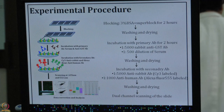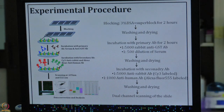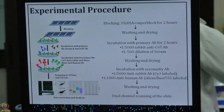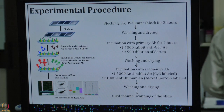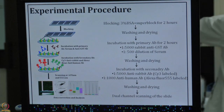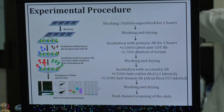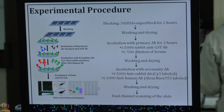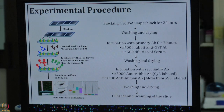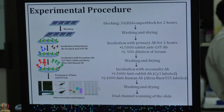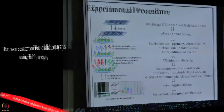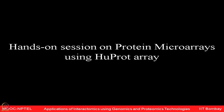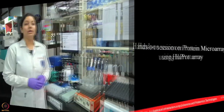We use a cocktail of serum containing the primary antibody from the human and anti-GST antibody to incubate with the slide. After incubation for 2 hours, we wash the slide and then incubate it with the secondary antibody, which contains Cy3 and Cy5 anti-antibodies, and then we scan it at dual channel.